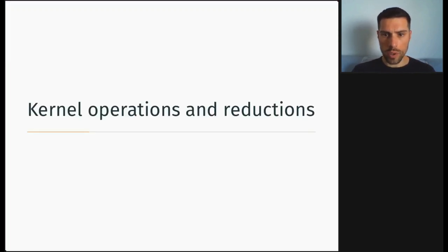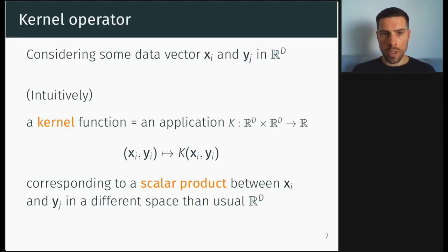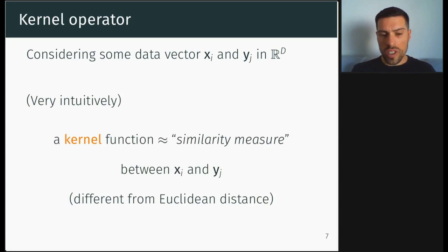So what is the core of KeOps and what it can do with kernel operation and reduction? First, let's imagine that we have some data vectors x and y that are d-dimensional and indexed by i and j. A kernel function will be a real-valued function that is applied to a pair of vectors. And it will correspond to a scalar product between these two vectors, but in a different space than the usual d-dimensional real value space. Very intuitively, a kernel function will be a similarity measure between the data vectors, but that is different from the Euclidean distance.